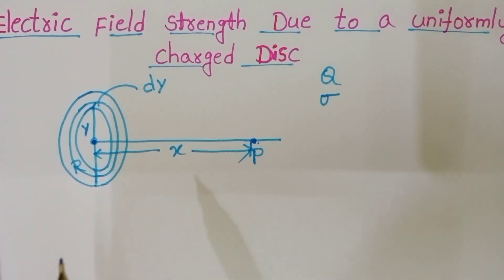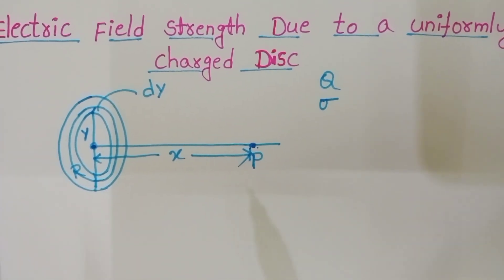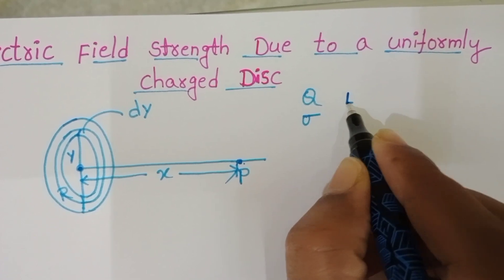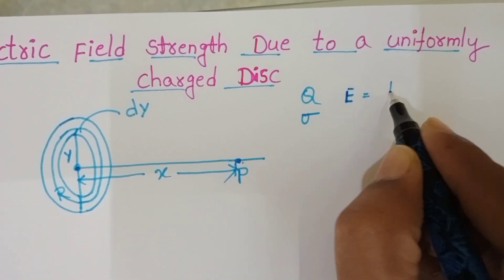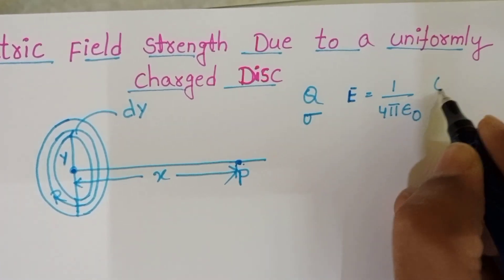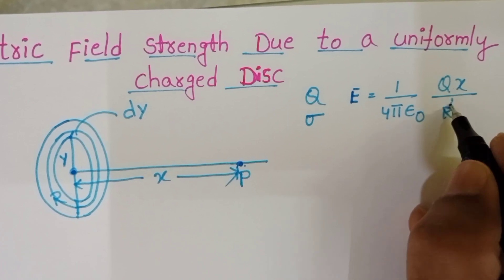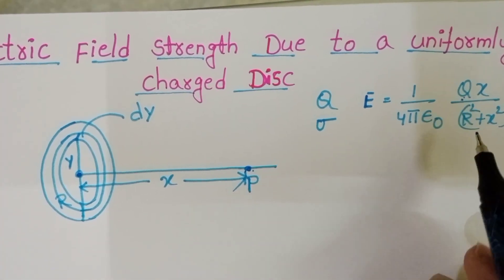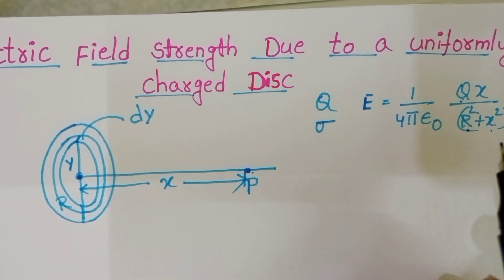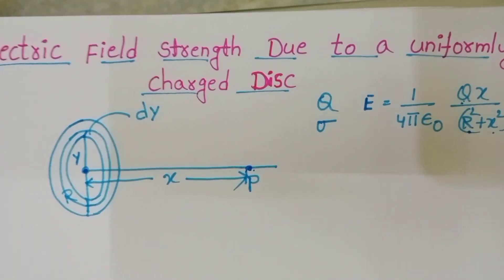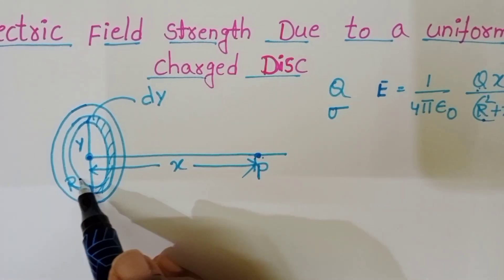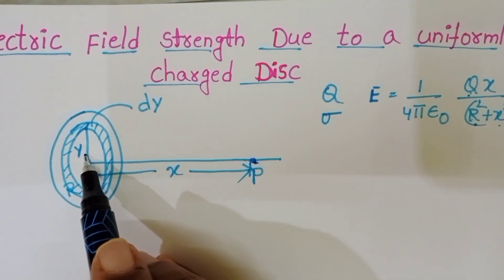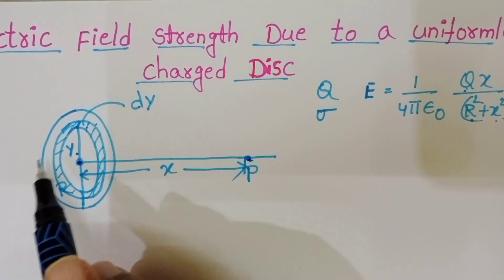In the last video I discussed electric field strength due to a uniformly charged ring. The formula is: q·x divided by (r² + x²)^(3/2), where q is the charge, r is the radius of the ring, and x is the distance from the center to point P. For this elemental ring, x is the distance from the center to point P, y is the radius of the ring, and dy is the thickness of the ring.